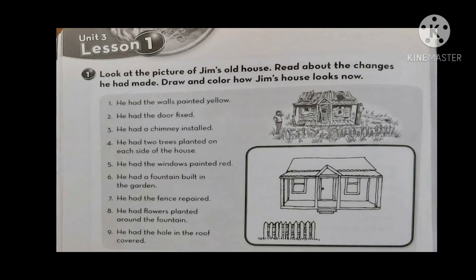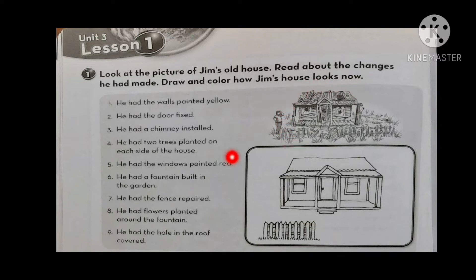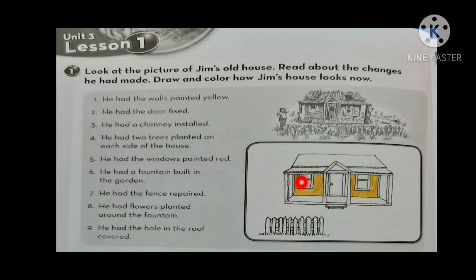Let's read it again. Look at the picture of Jem's old house. This is Jem's old house — look how the roof is damaged, how the door is damaged, the windows, and how the fence looks. We need to apply these changes to the picture. First: he had the walls painted yellow. The walls of the house — he had someone paint them yellow. He didn't do it himself.